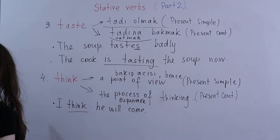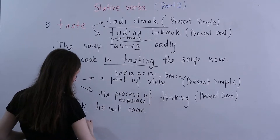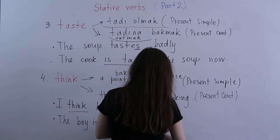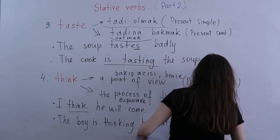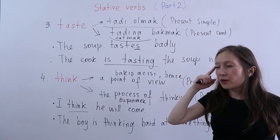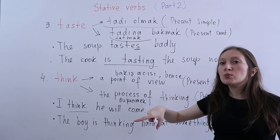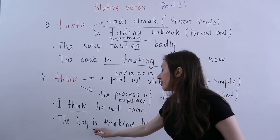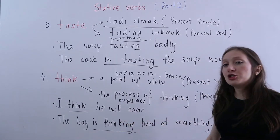The second meaning of 'think' is the process of thinking — düşünmek as an active process — and in this case we use present continuous. For example: 'The boy is thinking hard at something.' Imagine the boy right now actively thinking — the process is underlined. That's why we use present continuous: 'is' plus verb ING.